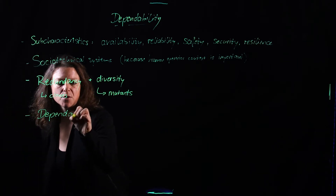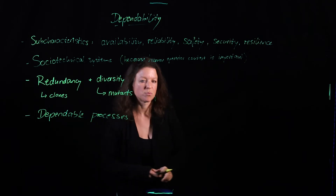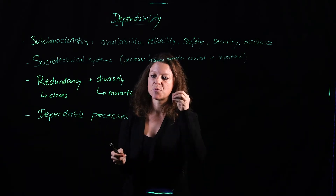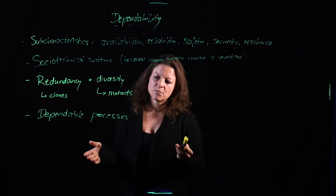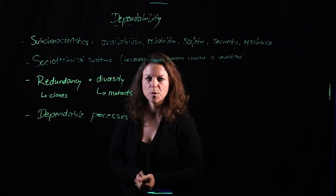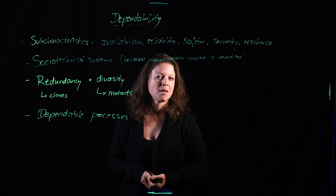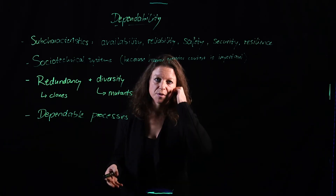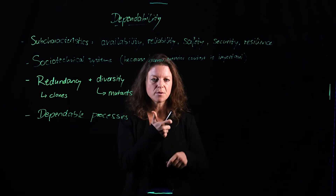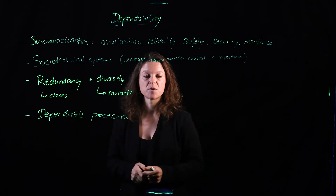We don't only want to depend on our software — we also want to depend on our processes. When we talk about dependable processes, we switch perspective. We are now not talking about the software system we are engineering; we are talking about the process we use to engineer it. What makes a software development process dependable? If you've been running a software company for five years with ten developers, you hopefully don't start from scratch every time. After five years you will have established a standard process that is repeatable because it's written down, documented, and you are measuring things so you can perform quality assurance on your process.